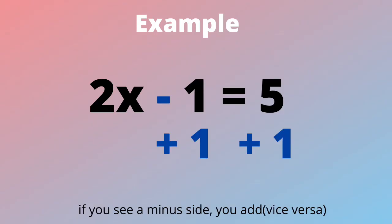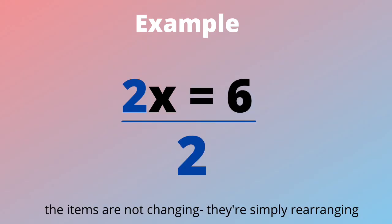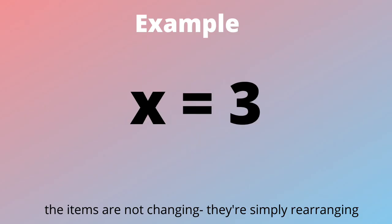If you see a minus sign, you add, and if it's multiply, you divide. The items are not changing, they're simply rearranging.